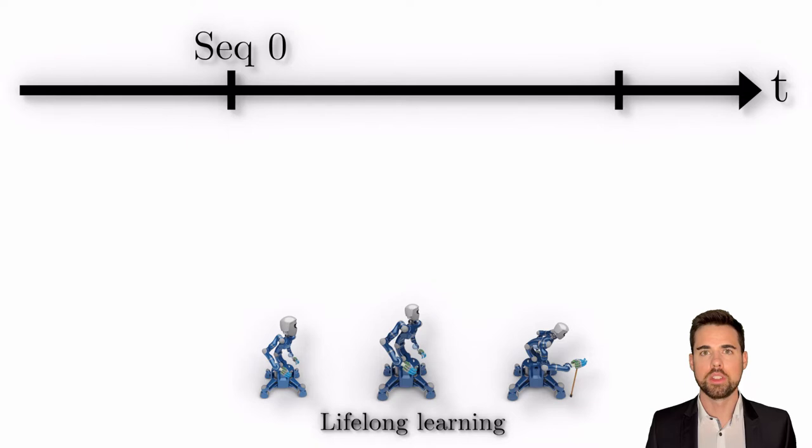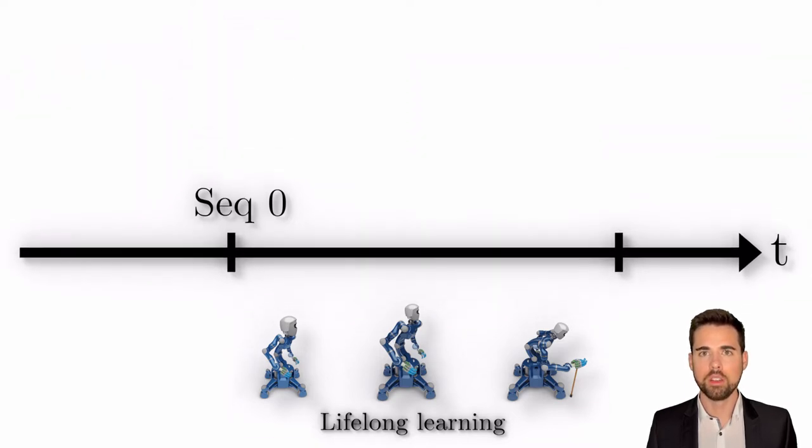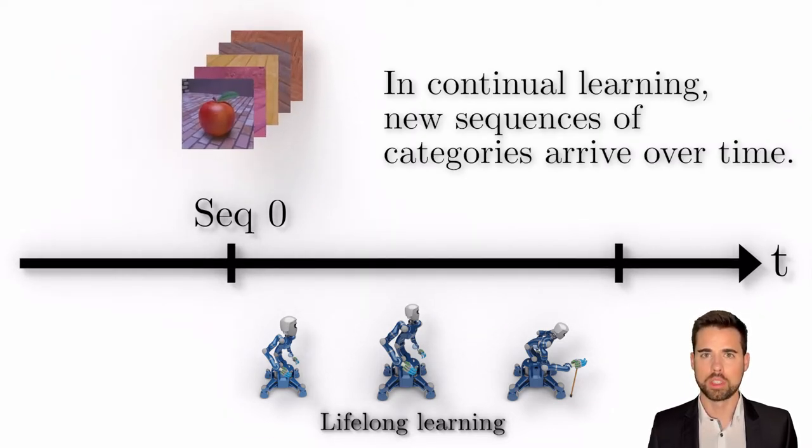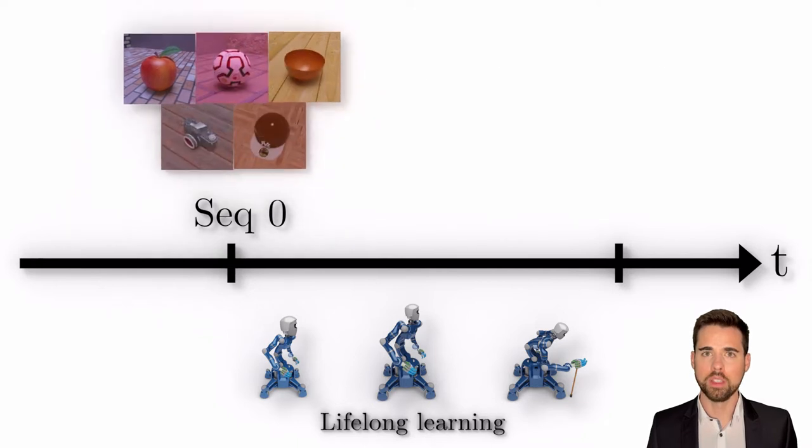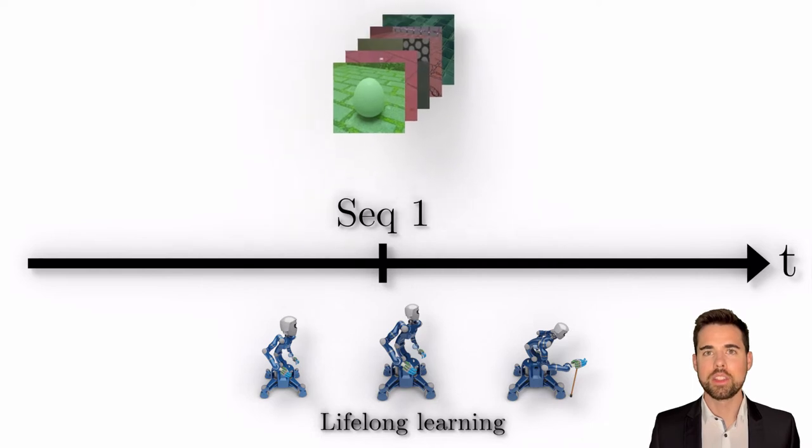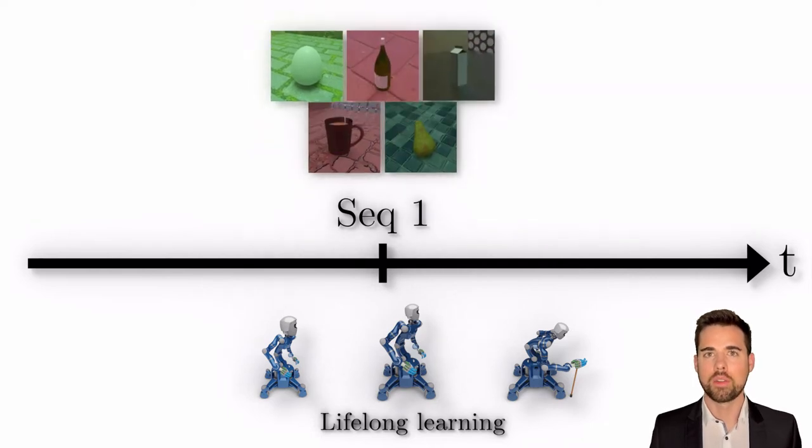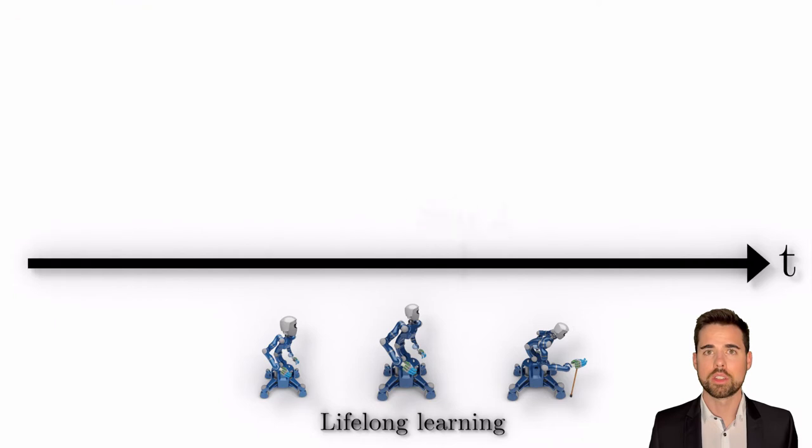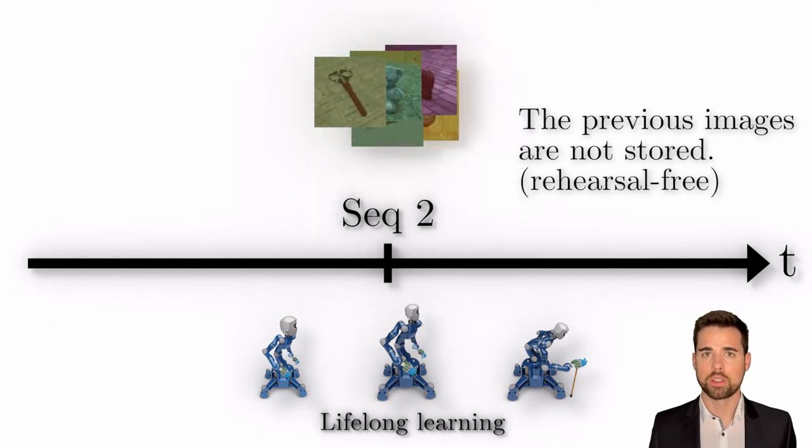The training procedure looks like this. New sequences of categories arrive over time. For example, here five new object categories. Each sequence has new, never seen categories and the images of previous categories are not stored.